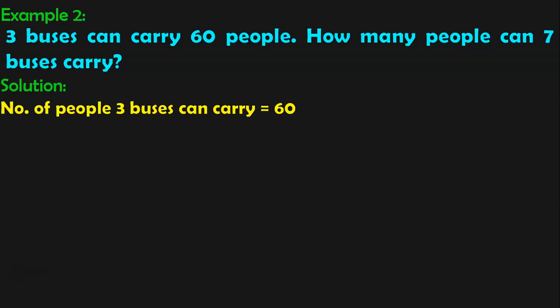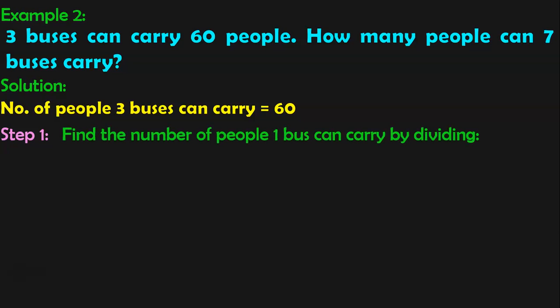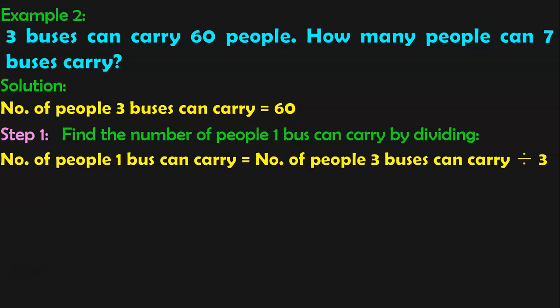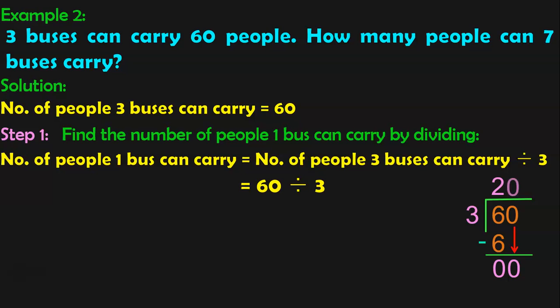What is the first step in the solution? Write down what is given: the number of people 3 buses can carry is equal to 60. Step 1 is to find out how many people can be carried in 1 bus by division. Number of people 1 bus can carry is equal to number of people 3 buses can carry divided by 3, which is 60 divided by 3. 60 divided by 3 is equal to 20. So, 20 people can be carried in 1 bus.